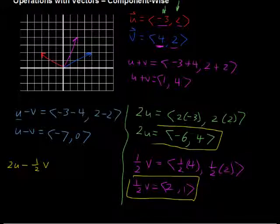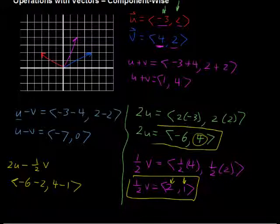But we want minus, so I'm going to go negative 6 minus the 2 because it's minus one half v, so minus 2. And the other component is 4 minus the one half v component, which is 1. So 2u minus one half v equals the components <-8, 3>.